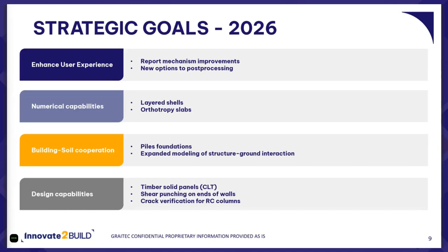For design capabilities in 2026, the main plans are related to the design of timber cross-laminated elements, being able to do checks for punching on ends of walls, and for RC columns to do verifications for cracks. Of course, there are just selected points.